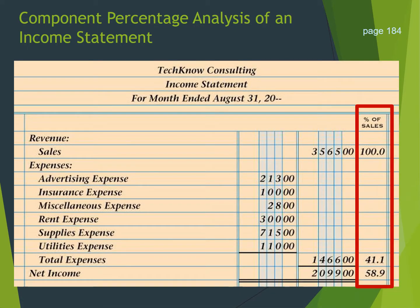If we take 41.1% plus 58.9%, we will find that we have 100% of sales. Looking at our income statement, we have now set up this income statement. Our first column is completed with all of our accounts. Our first dollar amount column is completed. Our second dollar amount column is completed. And if we look at the percentage of sales column, we will see that we have recorded 100% across from our total sales, 41.1% across from total expenses, and our net income component was 58.9%.